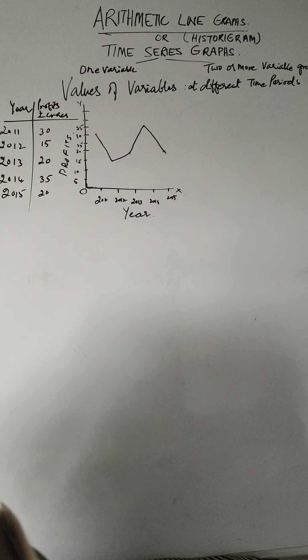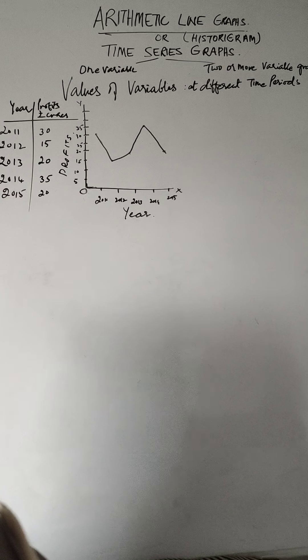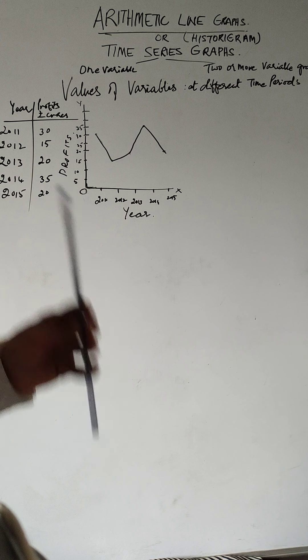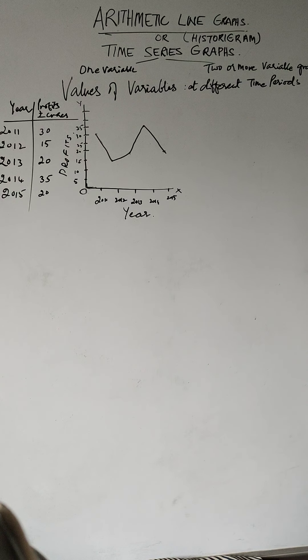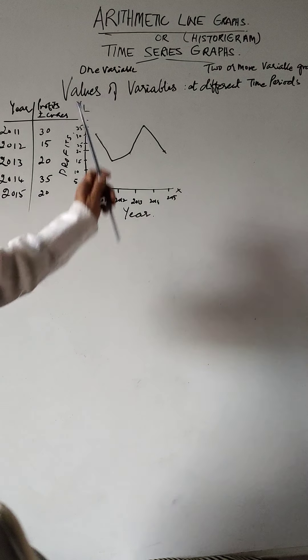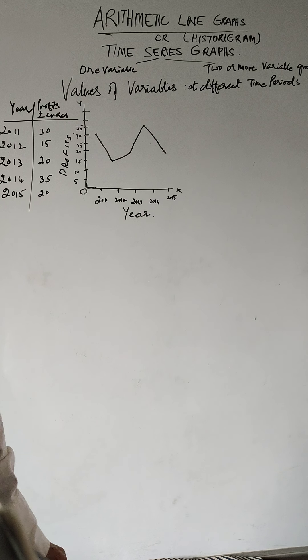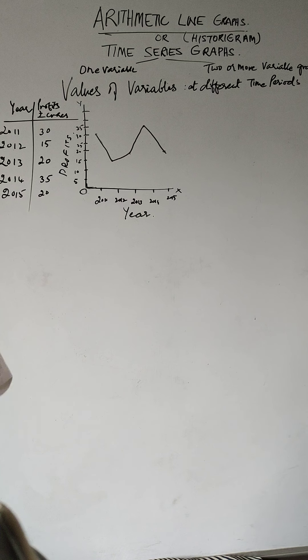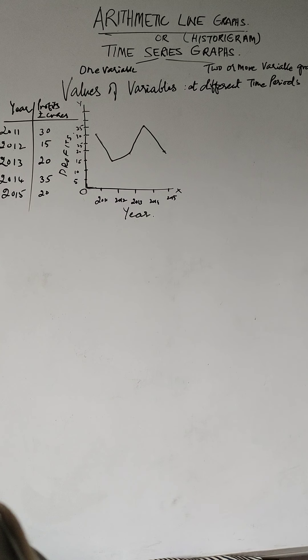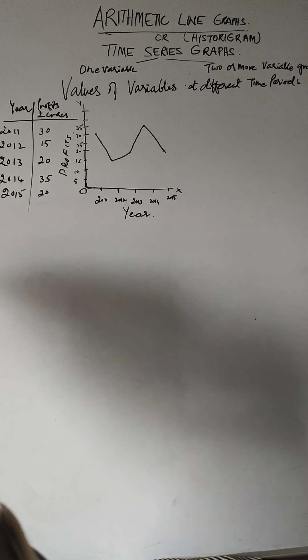What could be the general rules for constructing time series graphs? You must take care of these points when making the line graph. The independent variable, that is time, is taken on the x-axis. When we are talking about the independent variable, what is the independent variable?